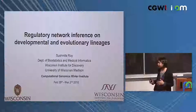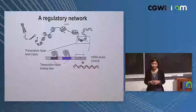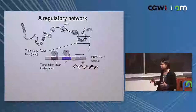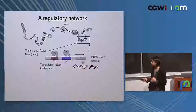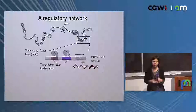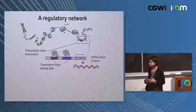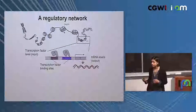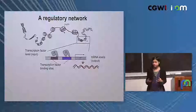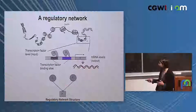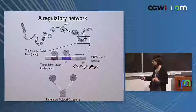I want to start at a very high level of what I mean by a regulatory network. A transcriptional regulatory network is a network that describes connections between transcription factor proteins and target genes. These networks specify context-specific downstream gene expression levels, and they are really important because of their relevance in disease and in evolution, since changes in gene regulation can have severe consequences. Network inference is trying to figure out this wiring diagram between regulators and target genes.